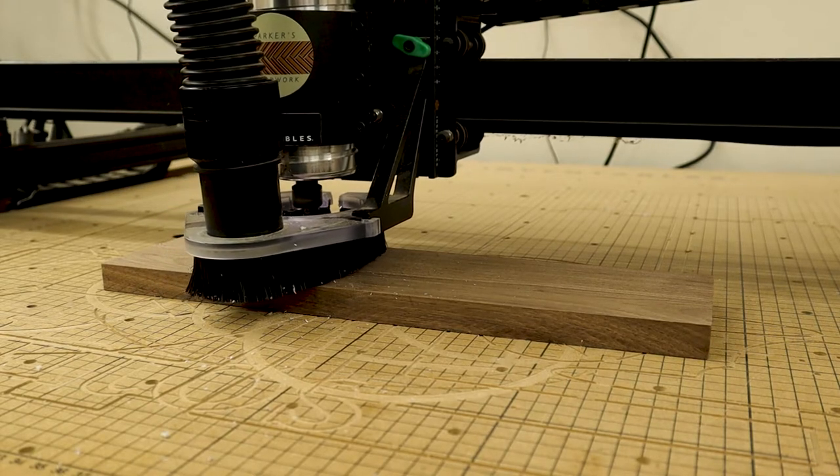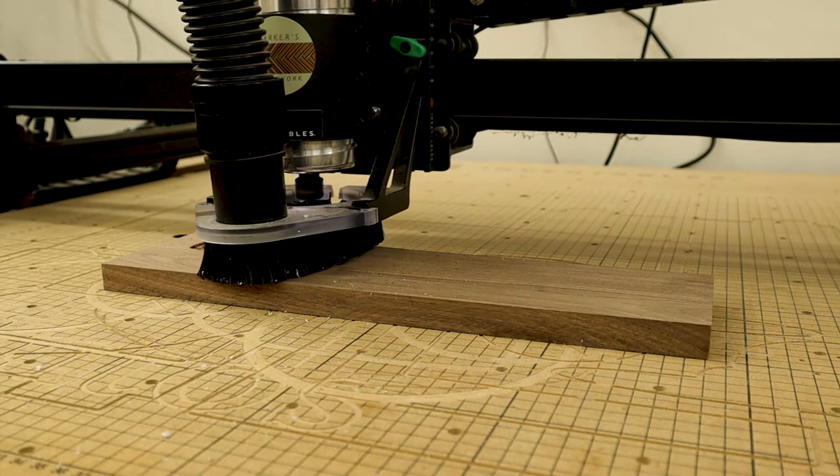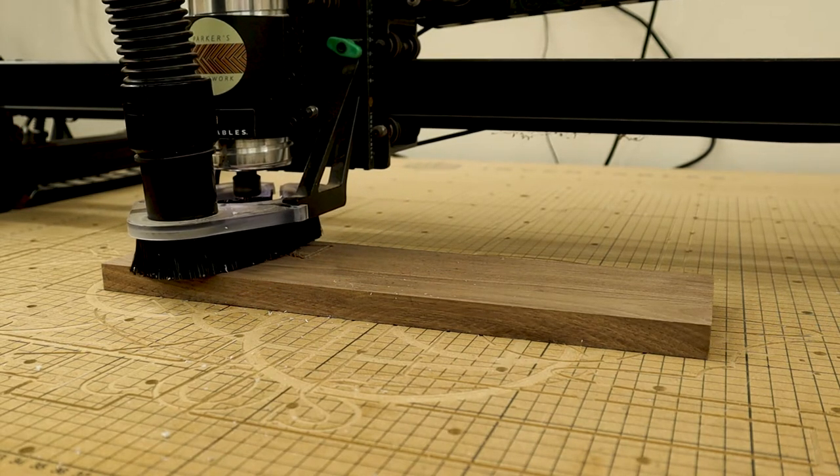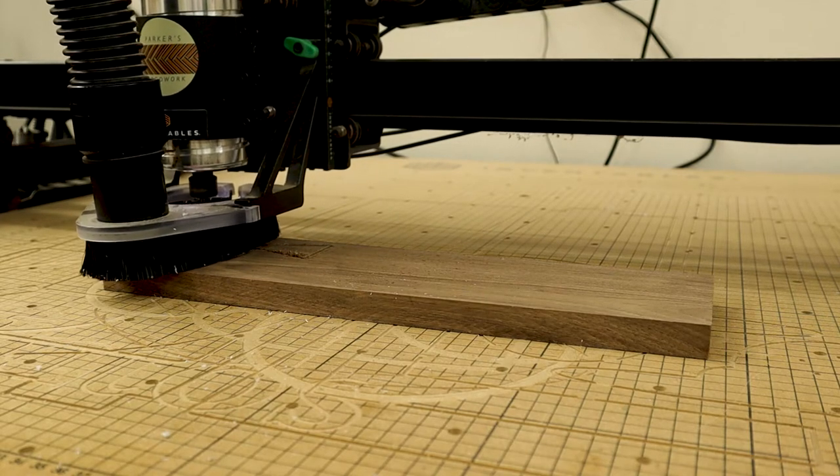So there are a couple of different ways to cut out bow ties. A lot of people cut them out on the bandsaw. Here I'm using my CNC. If you don't have either, you can order them online. Some people sell them on Etsy.